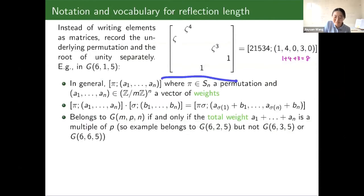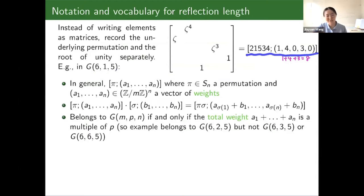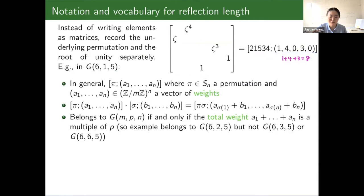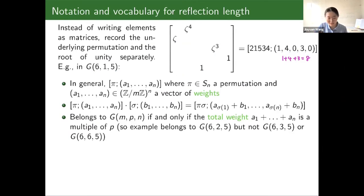So here we have an element in G(6,1,5). Instead of writing a matrix every time, we use this bracket notation. The first part is the underlying permutation of this element; the second part — these numbers — are the exponents of all the non-zero entries. So here we have 0, 4, 1, 1, 4, 0, 3, 1. These are called the weights of the entries, and the total weight is just the sum of all those numbers. This particular element has total weight 8.